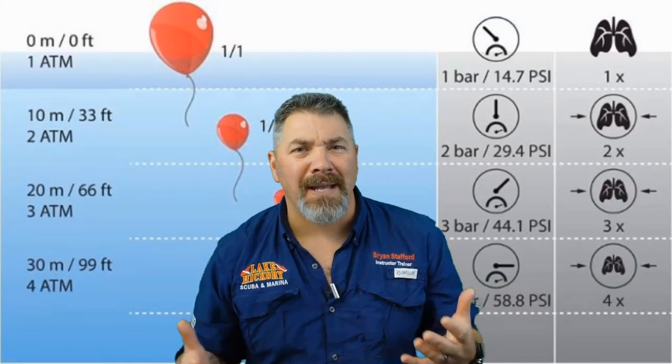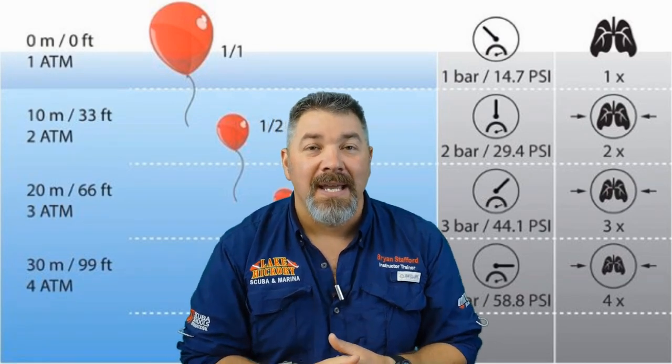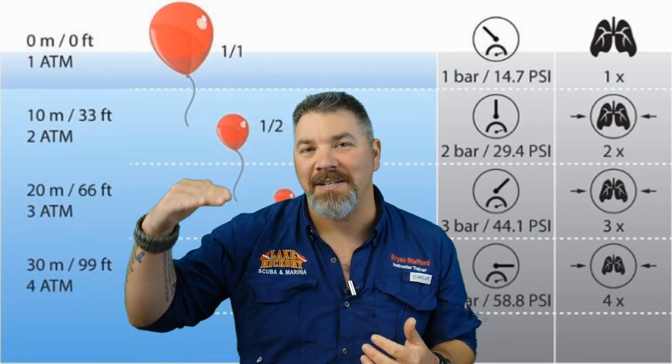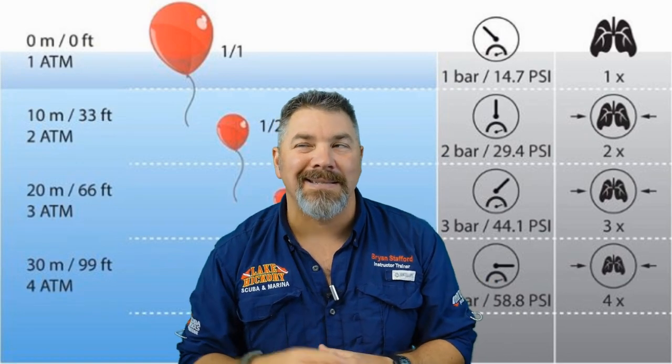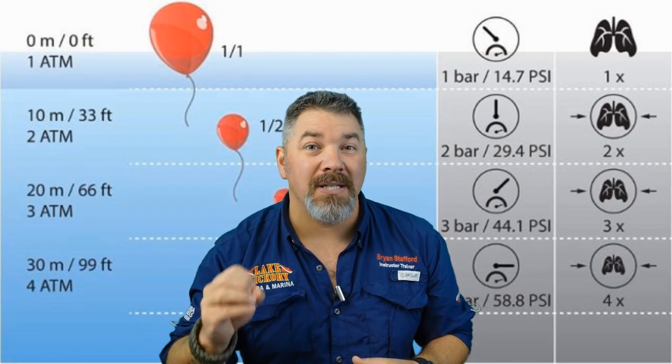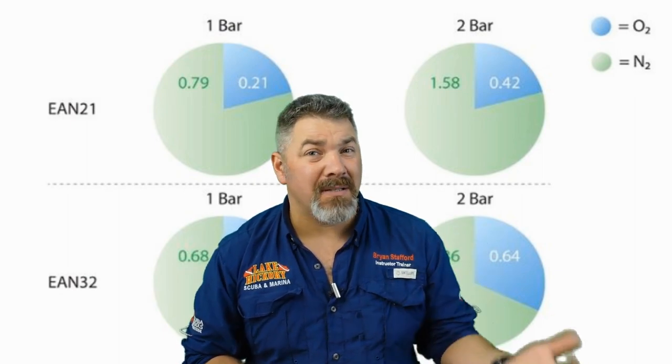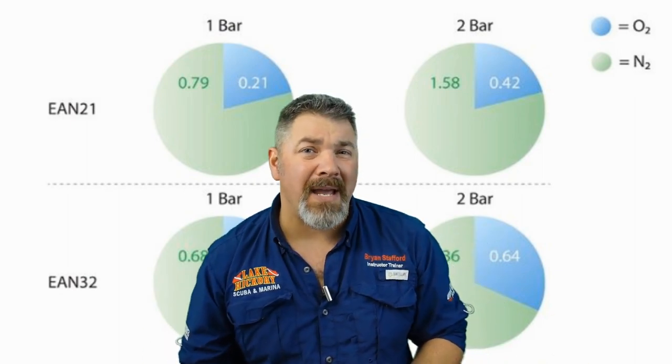Scuba divers have ascent rates we do not exceed. That ascent rate is 30 feet per minute — or the way I break it down, one foot every two seconds. Dive computers will let us know how fast we're coming up. If we exceed 30 feet per minute, those dive computers are going to beep at us to slow down so we don't risk barotrauma, air embolism, spontaneous pneumothorax, mediastinal emphysema, or subcutaneous emphysema. We want to prevent all these over-expansion injuries by simply coming up slowly and breathing in and out normally.